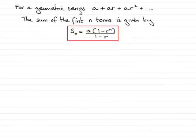Now, if you have a geometric series a plus ar plus ar squared plus and so on, then the sum of the first n terms is given by this equation here: Sn equals a multiplied by 1 minus r to the power n, all divided by 1 minus r, where a is the first term and r is the common ratio.